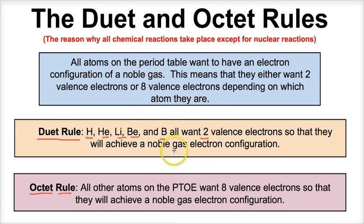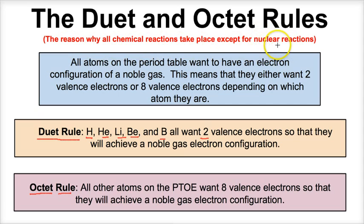It's an important concept to understand that it's the transfer or sharing of electrons between atoms trying to achieve their duet rule or octet rule that drives virtually 99.9% of all chemical reactions except for nuclear reactions. They're all trying to get either two or eight valence electrons so they can look like a noble gas.